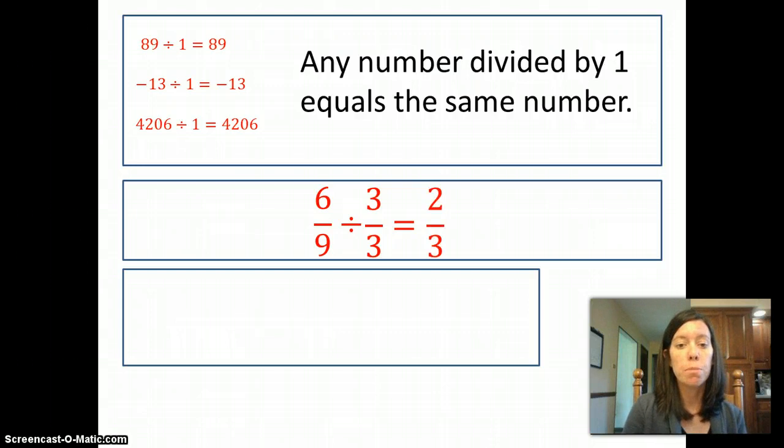We get the 2 thirds from doing 6 divided by 3, that's 2, and 9 divided by 3, that's 3. So the answer is 2 thirds.